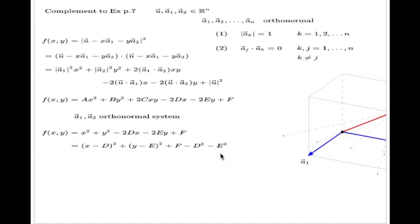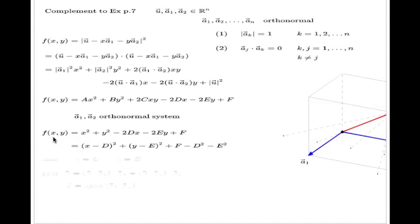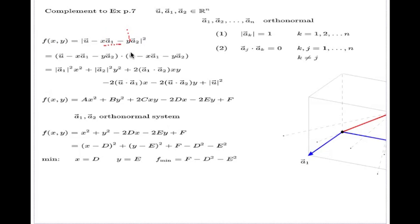Now we can answer when this function takes its minimum value. We're looking at a function which is basically a constant number plus two non-negative quantities. The lower these positive quantities are, the lower the function. The lowest possible value for these two non-negative quantities is zero, and they will be zero when x equals D and when y equals E. So the minimum of the function happens when x = D, y = E, and the minimum value of the function is that constant.